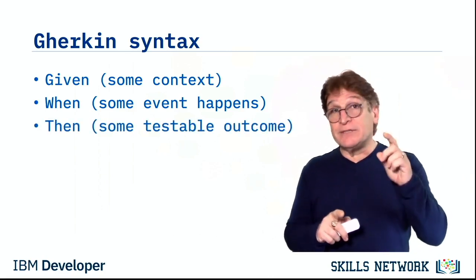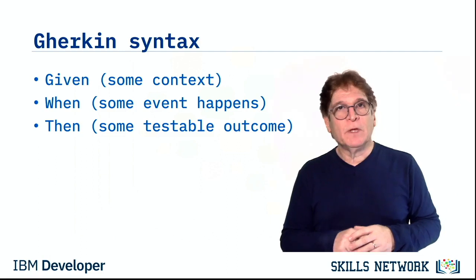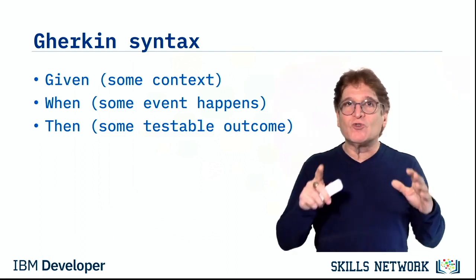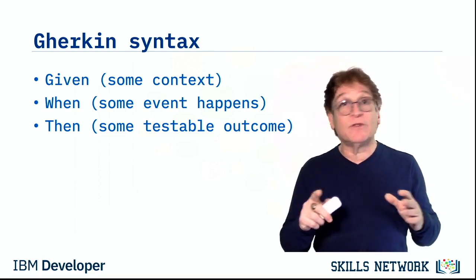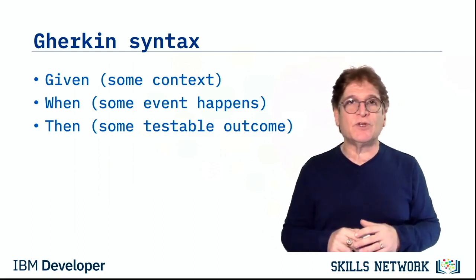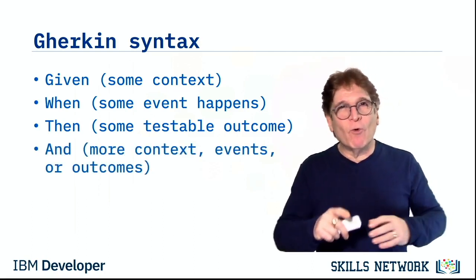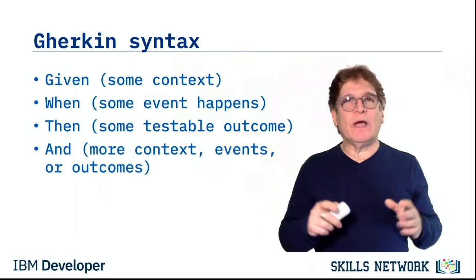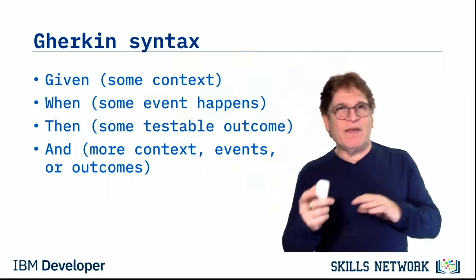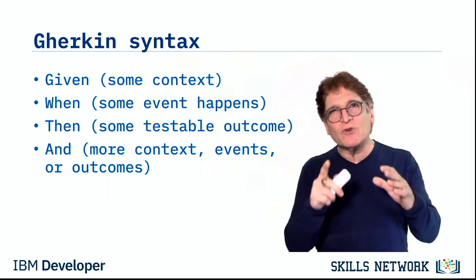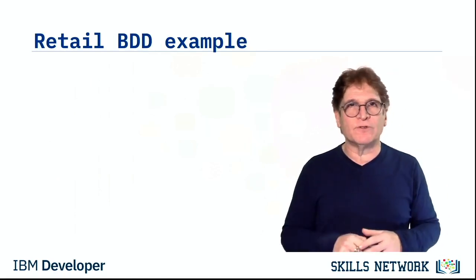Then some testable outcome or behavior is validated. Then is used to observe the outcomes, and the observation should be related to the business value or the benefit of the feature. And is used for continuations — given this and that, then this and that, and so on. It gives you a natural way of adding more context, events, or outcomes.